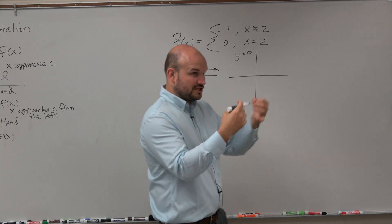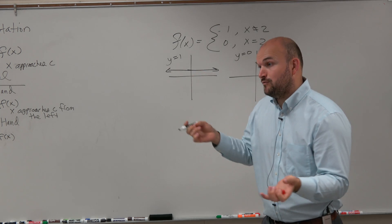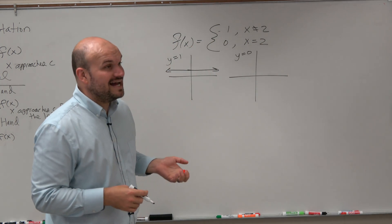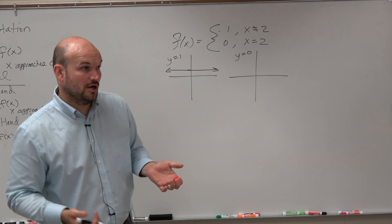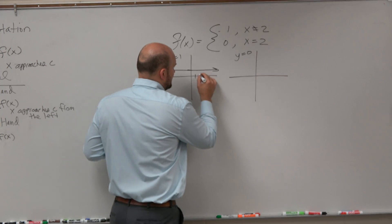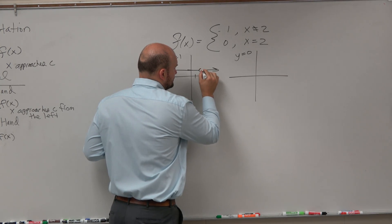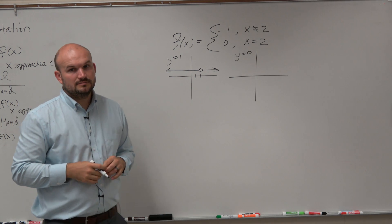However, there is a constraint. It says graph y equals 1, but x cannot equal 2. So therefore, there's going to be a little hole, okay?